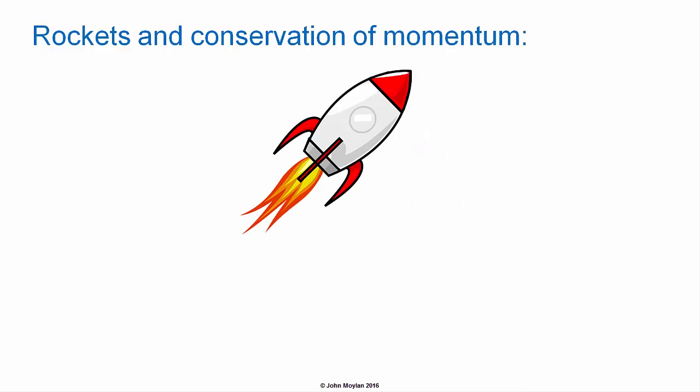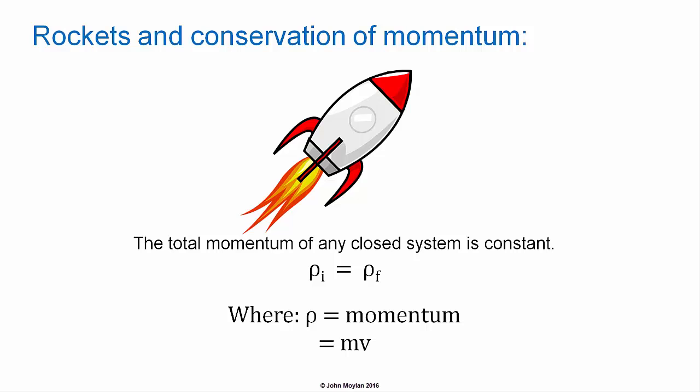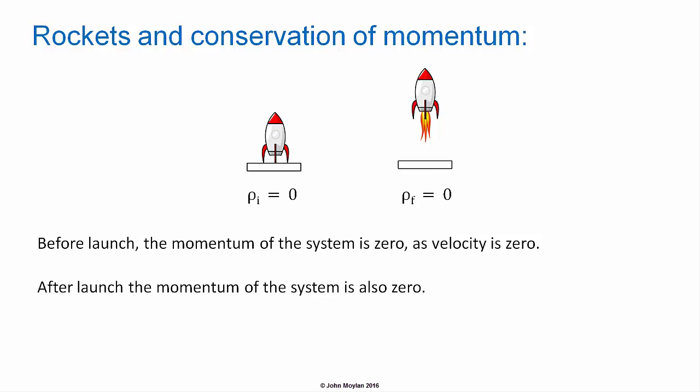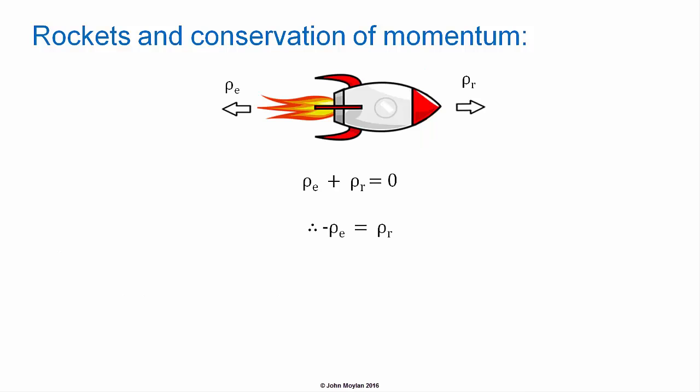Rockets and the conservation of momentum. The total momentum of any closed system is constant: rho subscript i equals rho subscript f, where rho is momentum, which is equal to mass in kilograms multiplied by velocity in meters per second. Before launch, the momentum of the system is zero, as the velocity is zero. After launch, the momentum of the system is also zero. As the momentum is zero after launch, the momentum of the exhaust plus momentum of the rocket has to equal zero.